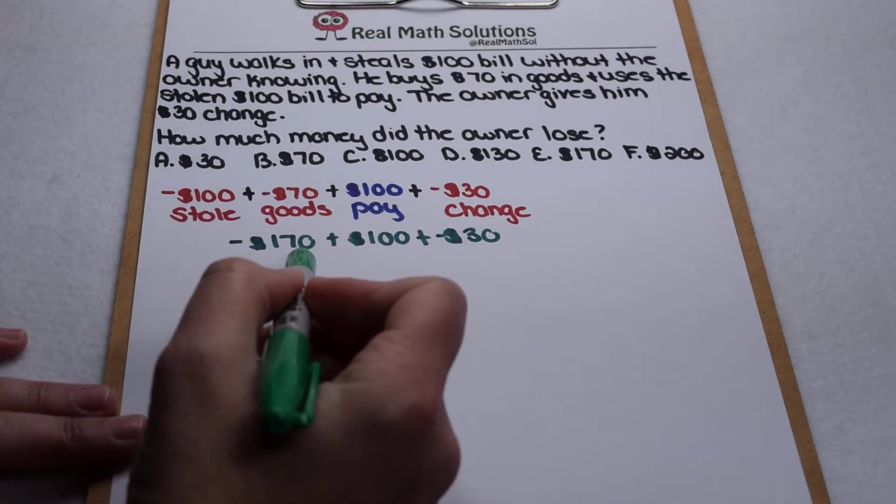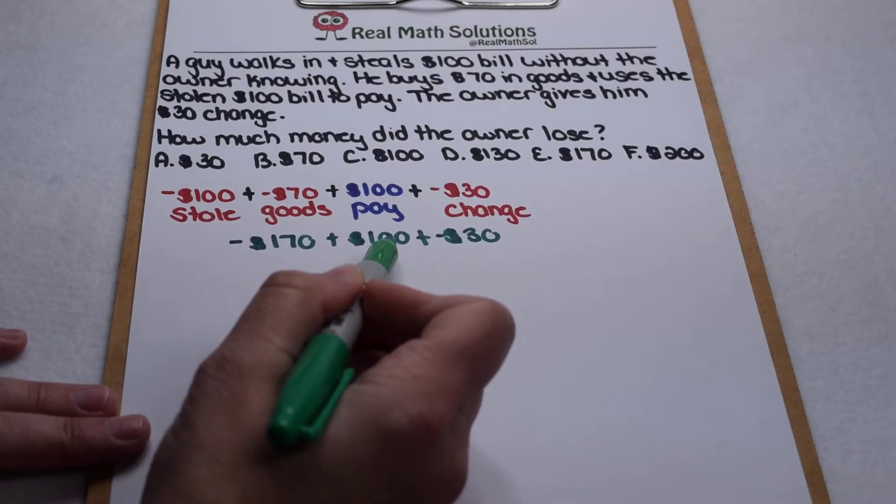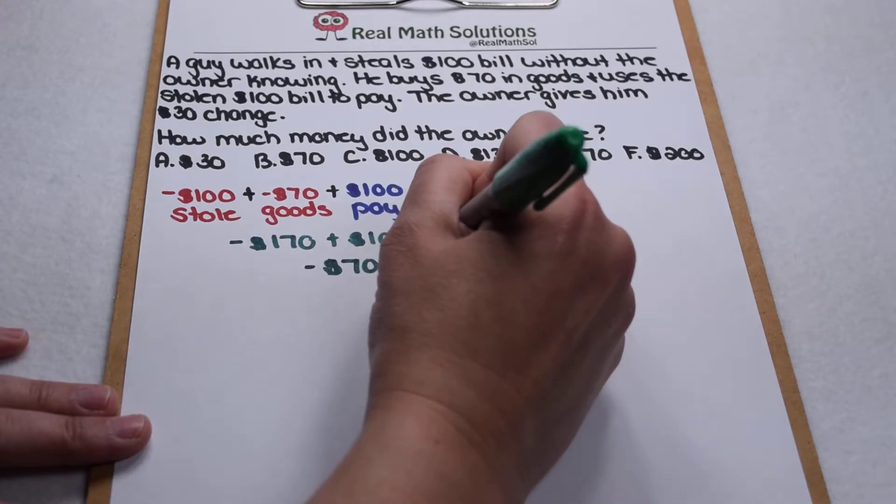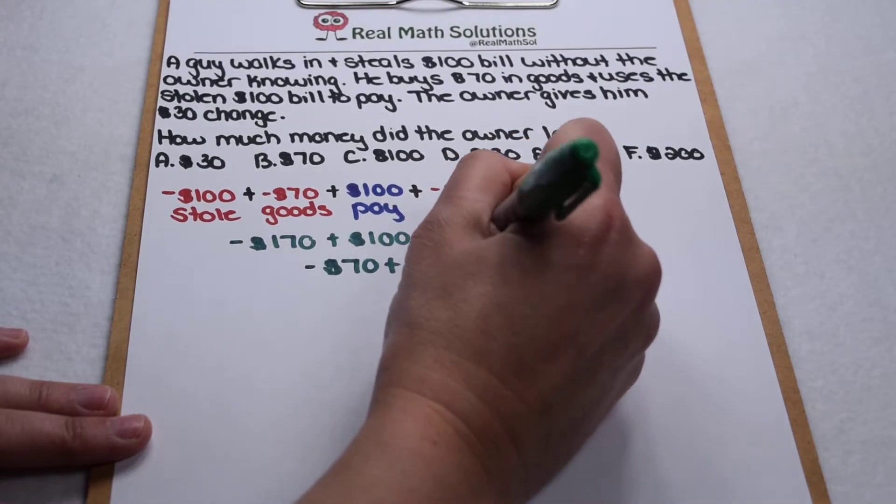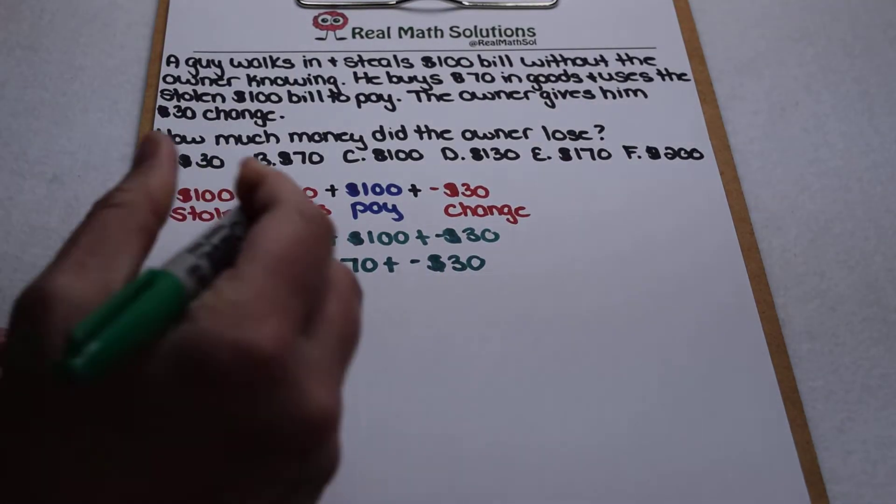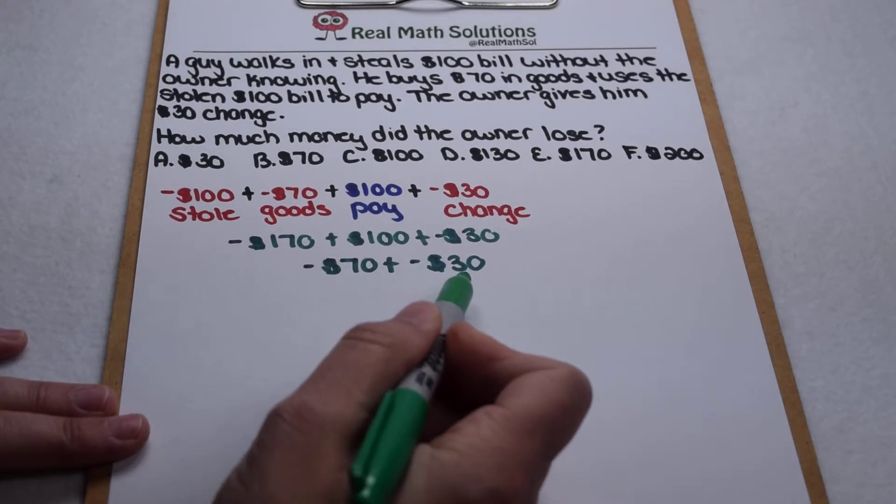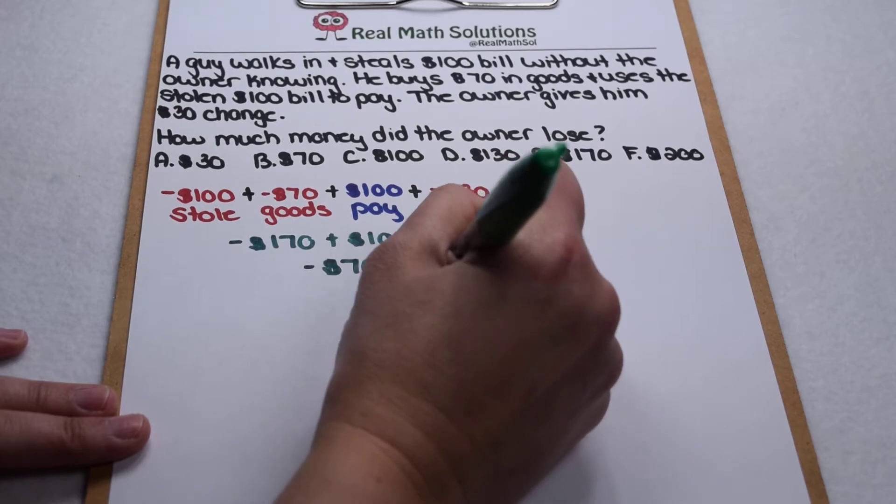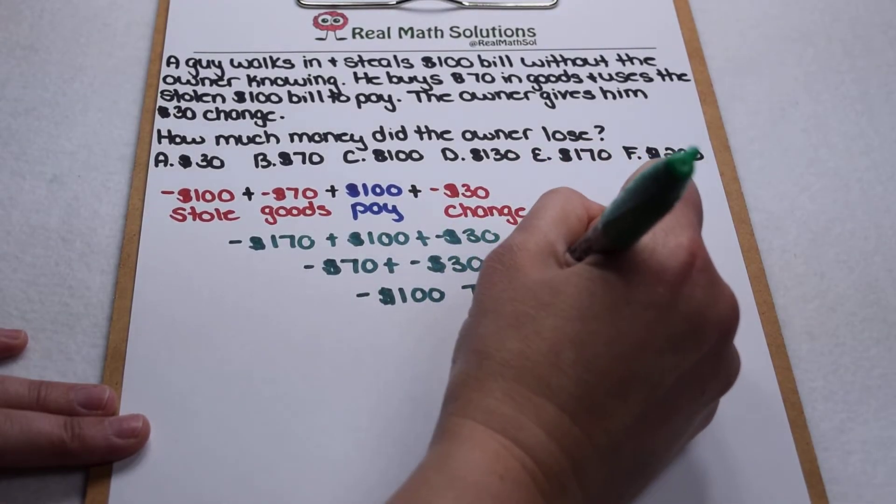So negative $170 that he's lost, but then he gets his $100 bill back, so that puts him at negative $70 and he's still going to lose another $30 and change. So the negative $70 in goods and the negative $30 and change means we're at negative $100 total.